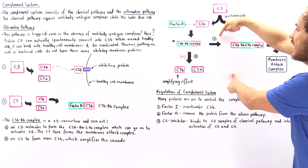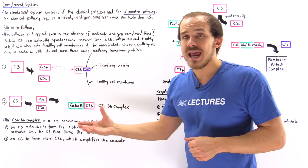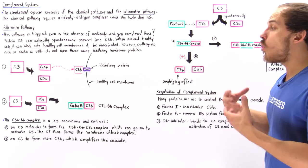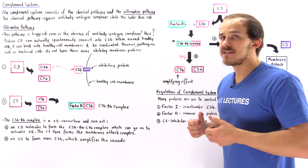Once we form this complex in process A, it goes on to activate C5. C5 is broken down into C5a and C5b, and it is C5b that calls upon C6, C7, and C8. They combine to form the membrane attack complex, which forms a water channel on the membrane that lyses and kills that cell.